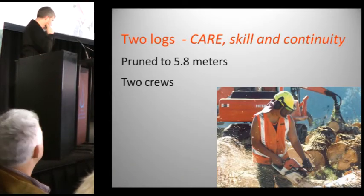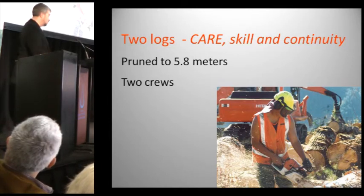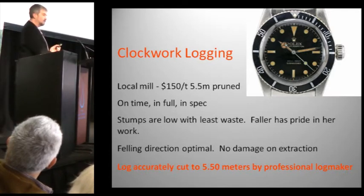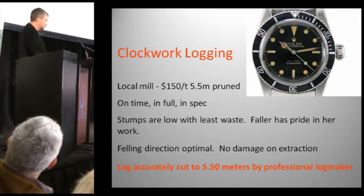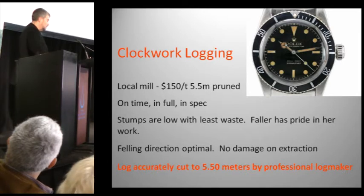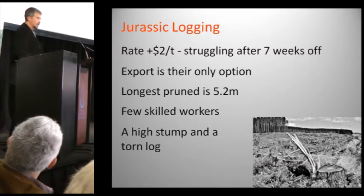Here's a tale of two logs — two theoretical trees, separate forests, both pruned to 5.8 metres high, two separate crews with different conditions. Crew A has good logging, is ready to sell 5.5 metre pruned logs in volume to a local mill at $150 a tonne. They have a good reputation for delivering on time and in spec — that's why they have access to this market. Their crew skills are really high level, the stumps are low, there's least waste from that big valuable pruned log. The faller has a lot of pride in her work, trees are laying down easy to extract, and there's really little damage when machinery is extracting those logs. The result is an accurately cut 5.5 metre log for sale.